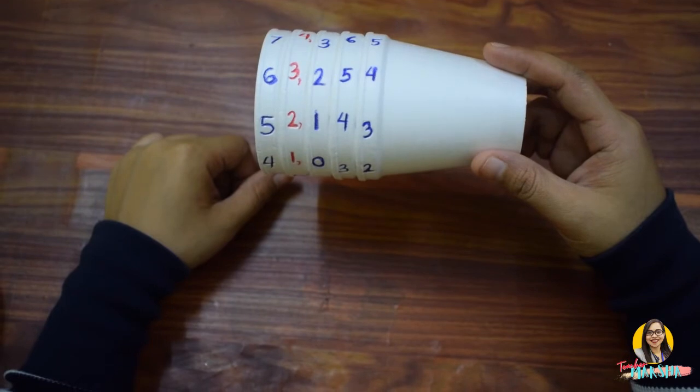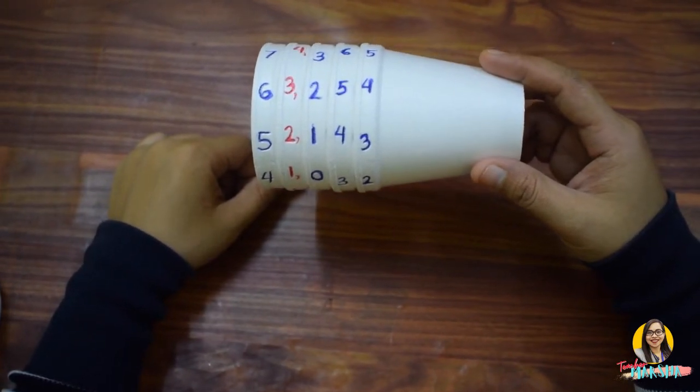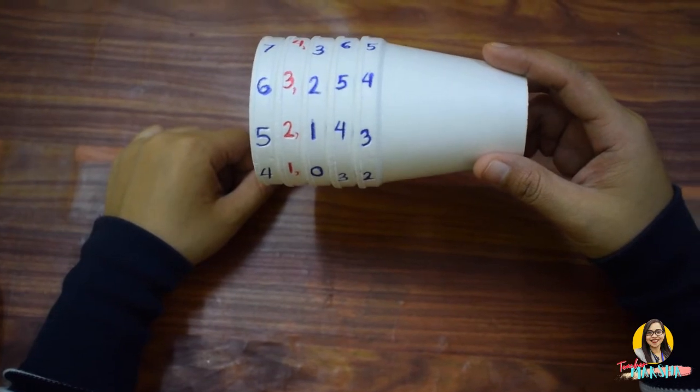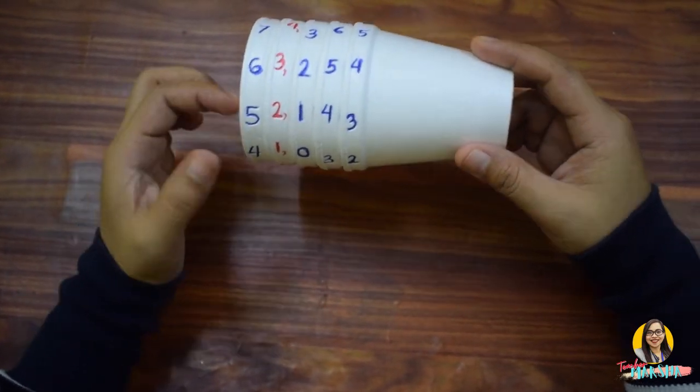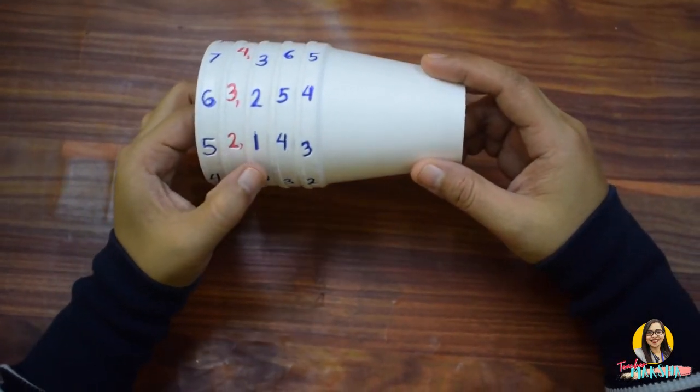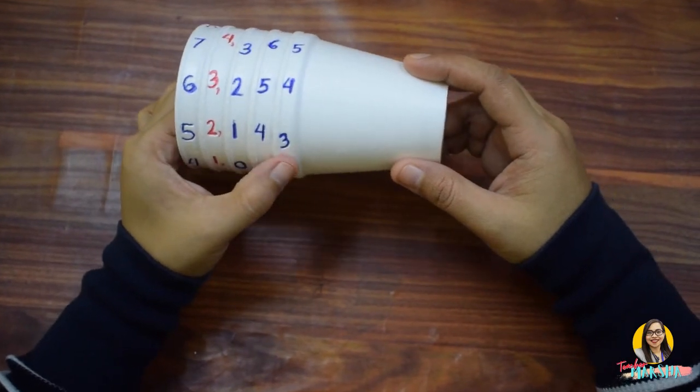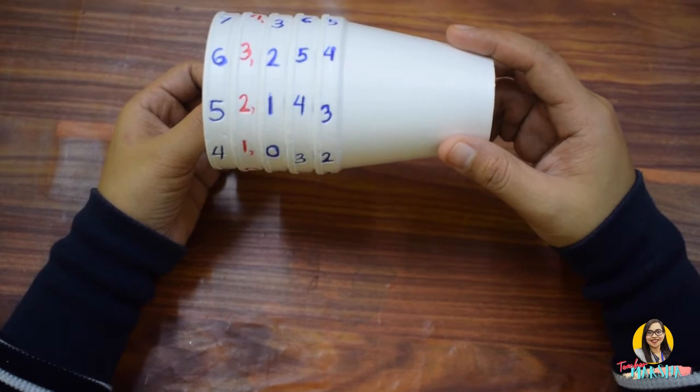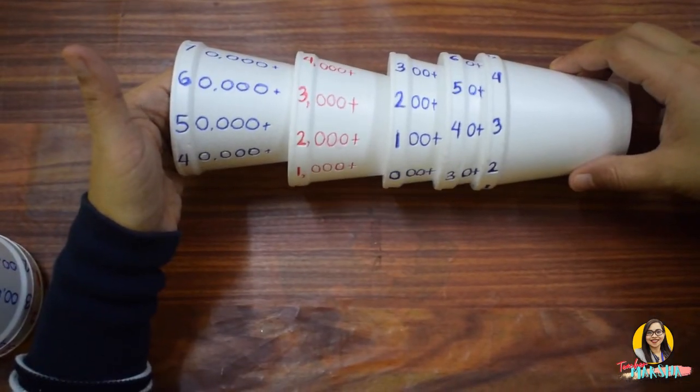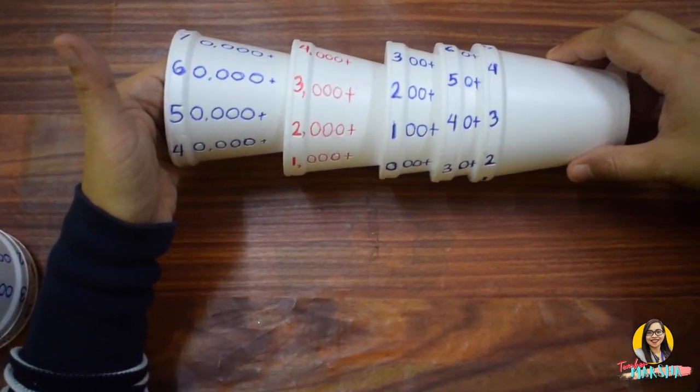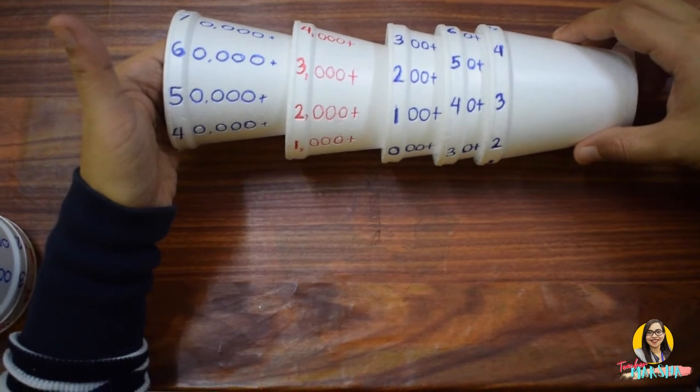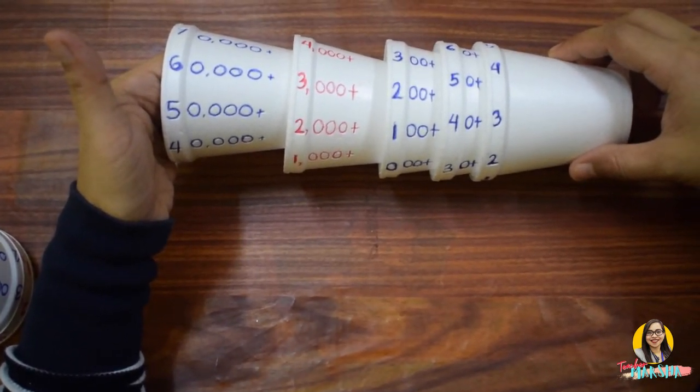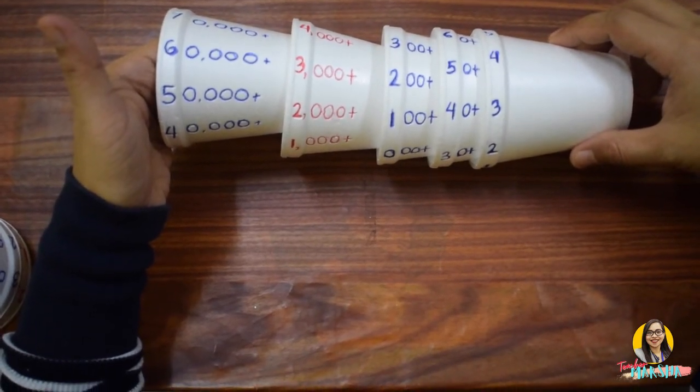Now, let's try with ten thousands. After rotating the cups, you need to select five digits. For example, we have 5, 2, 1, 4, 3. Now, let's get the value of each digit. So, now we have 50,000 plus 2,000 plus 100 plus 40 plus 3. So, you read it as 52,143.